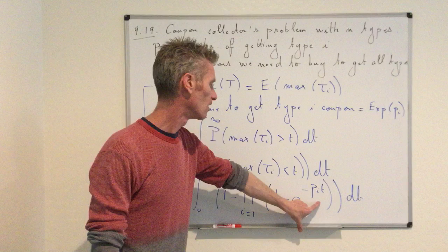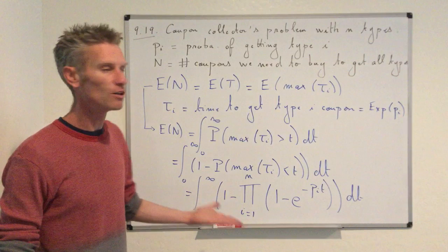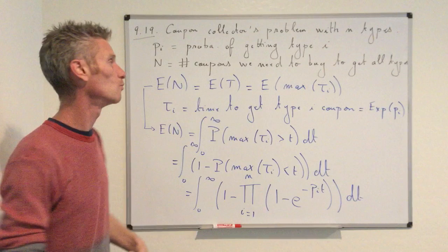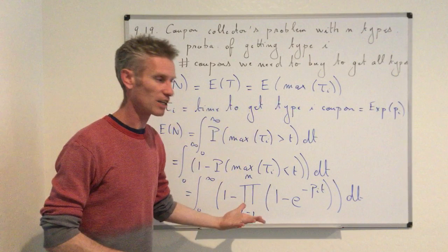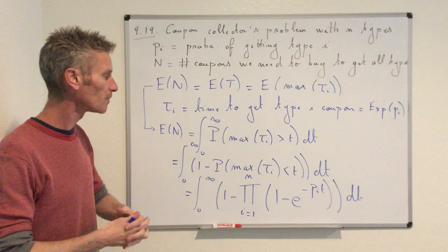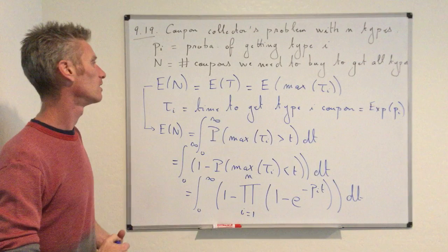You can also verify that if PI = 1/N for all I, this expression simplifies back to something of order N log N. That's it for lecture 26. The next lectures will cover continuous-time Markov chains, which are related to both Poisson processes and exponential random variables, as well as discrete-time Markov chains. Chapter 10 — the last chapter we cover in this class — is essentially a mixture of chapter 7 (discrete-time Markov chains) and chapter 9 (Poisson processes and exponential random variables).